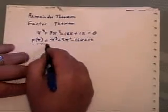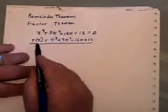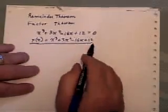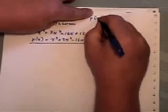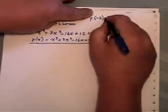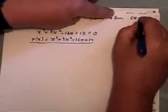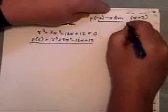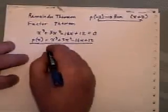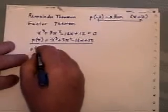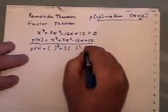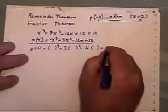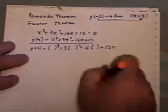This is the polynomial written in function notation that we're going to analyze. The remainder theorem says that if I take this polynomial and replace the letter x by any number, let's say negative 2, then what I'm finding is what is the remainder if I divided the polynomial by x plus 2 — the opposite of that sign there. So to find p of negative 2, I write out the equation and wherever I see the letter x I put a bracket, and then in the bracket I put negative 2.